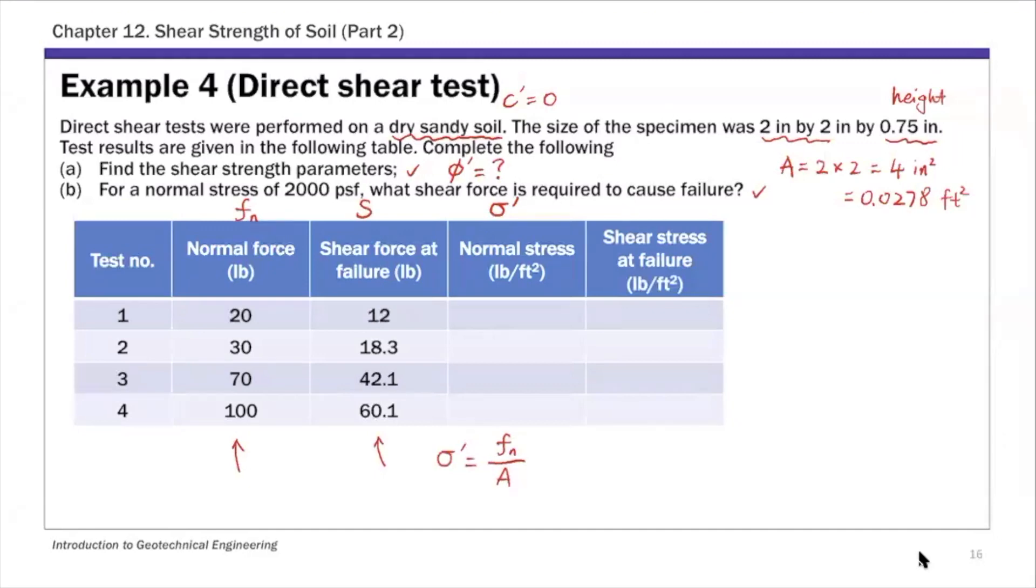Using the normal force divided by 0.0278, this gives us 720, 1080, 2520, and 3600. That's normal force divided by area.